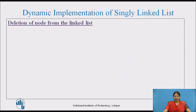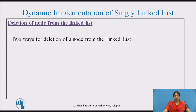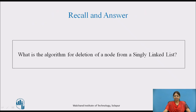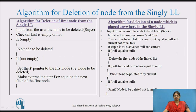Let's see the deletion of a node from the linked list. There are two ways — from the first node or from anywhere in the linked list. Try to recall the algorithm for deletion of a node from a single linked list. Pause the video and note it down. This algorithm is already explained in detail in my previous video on deletion of node from single linked list.